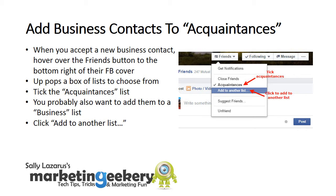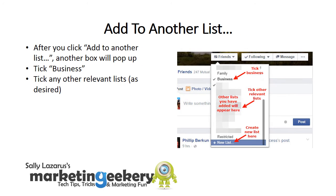When you accept a new business contact, hover over the Friends button to the bottom right of their Facebook cover. Up pops a box of lists to choose from — tick the Acquaintances list. You probably also want to add them to a business list, so click 'Add to another list.' After you click that, another box will pop up. Tick Business, and tick any other relevant lists as desired.